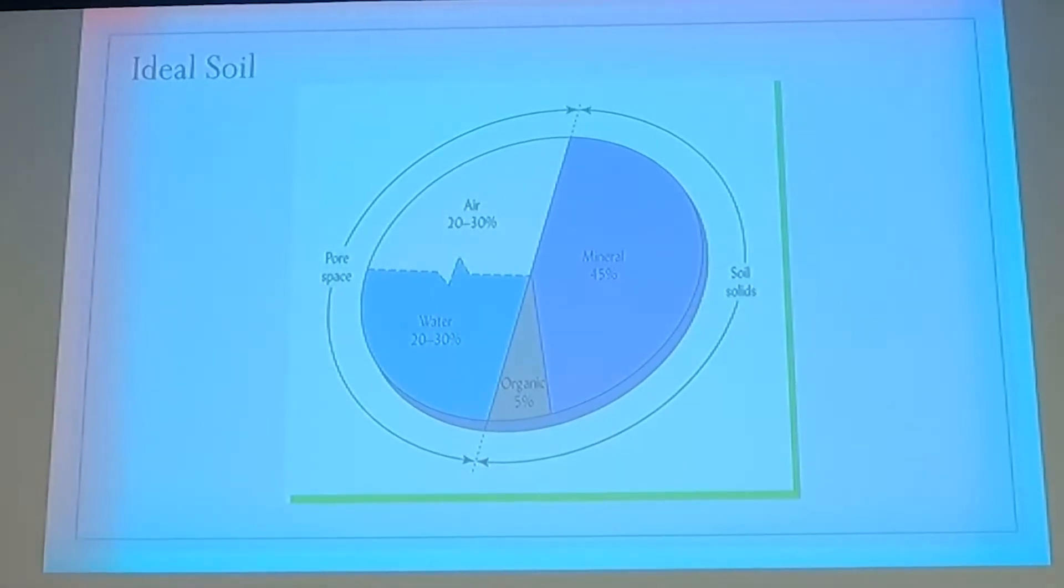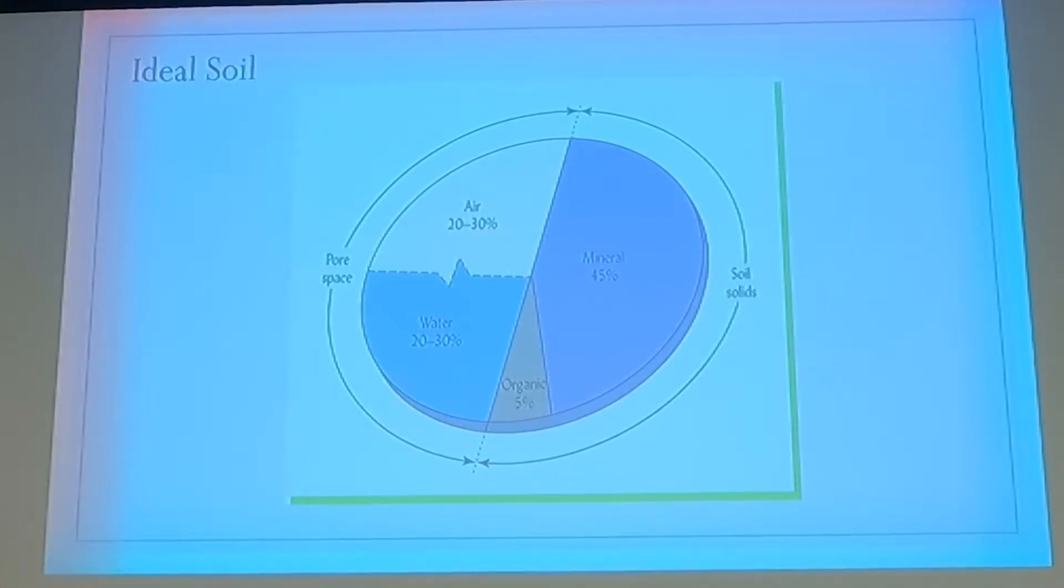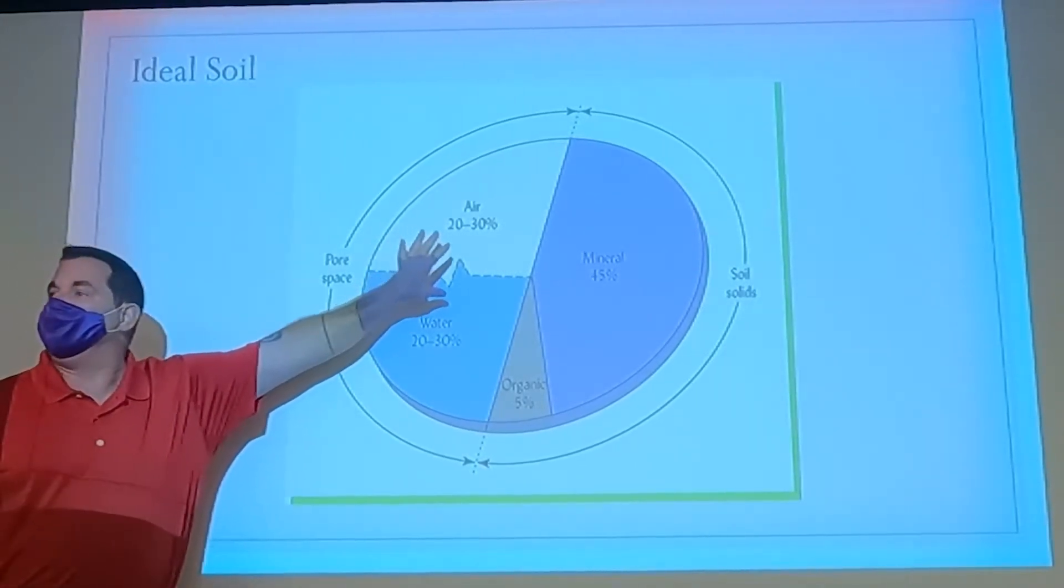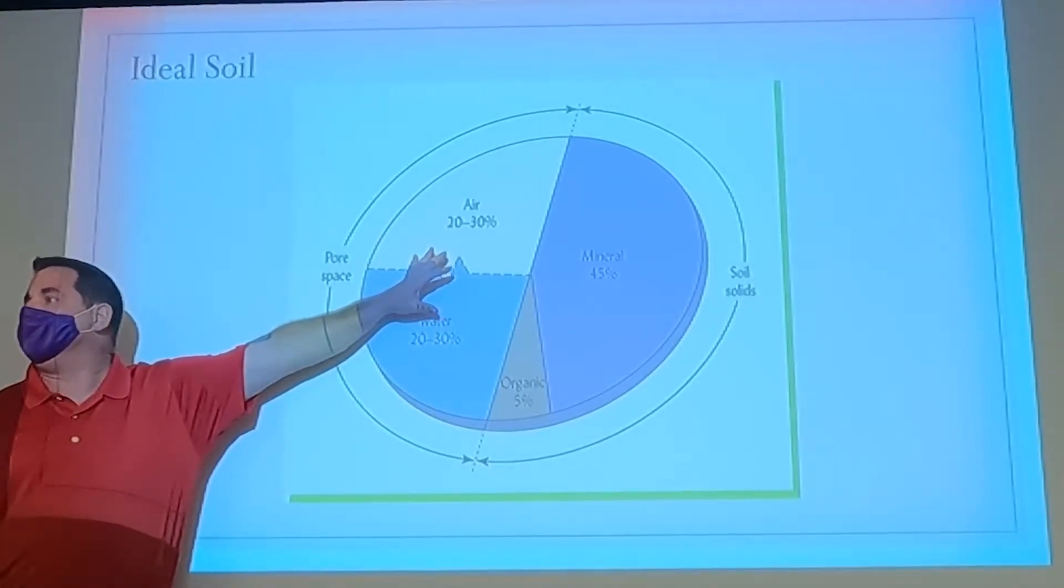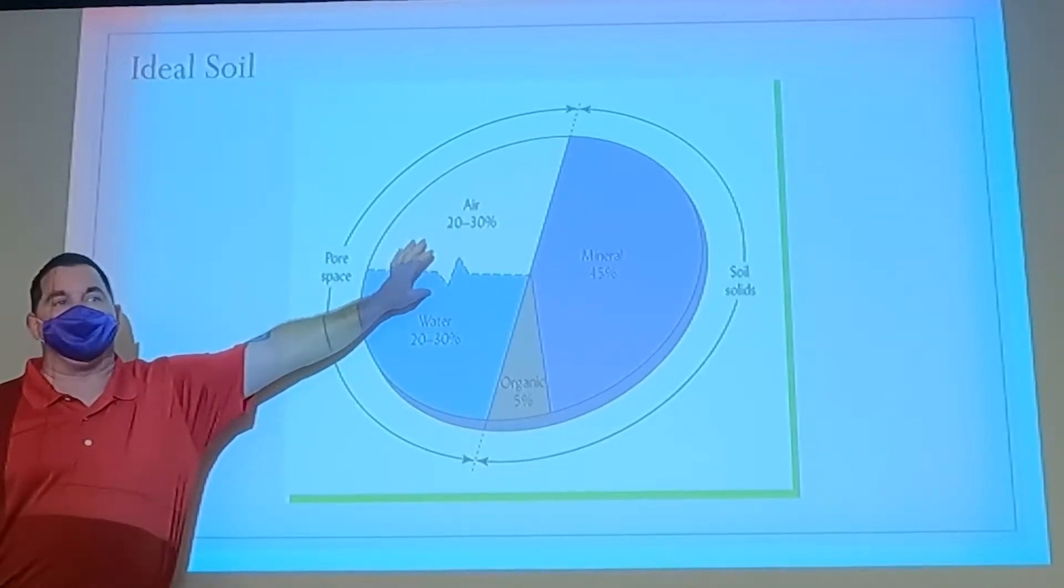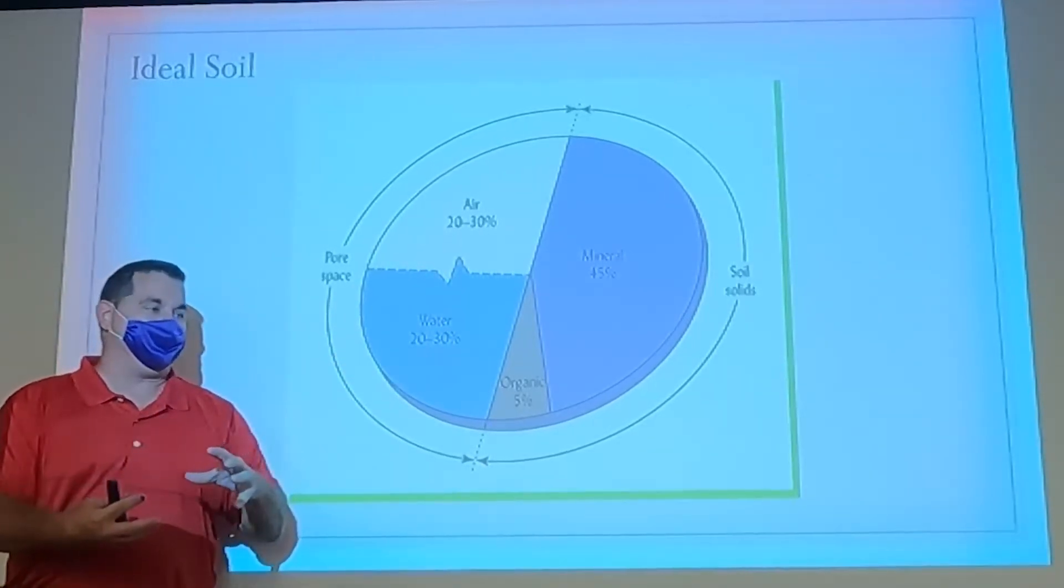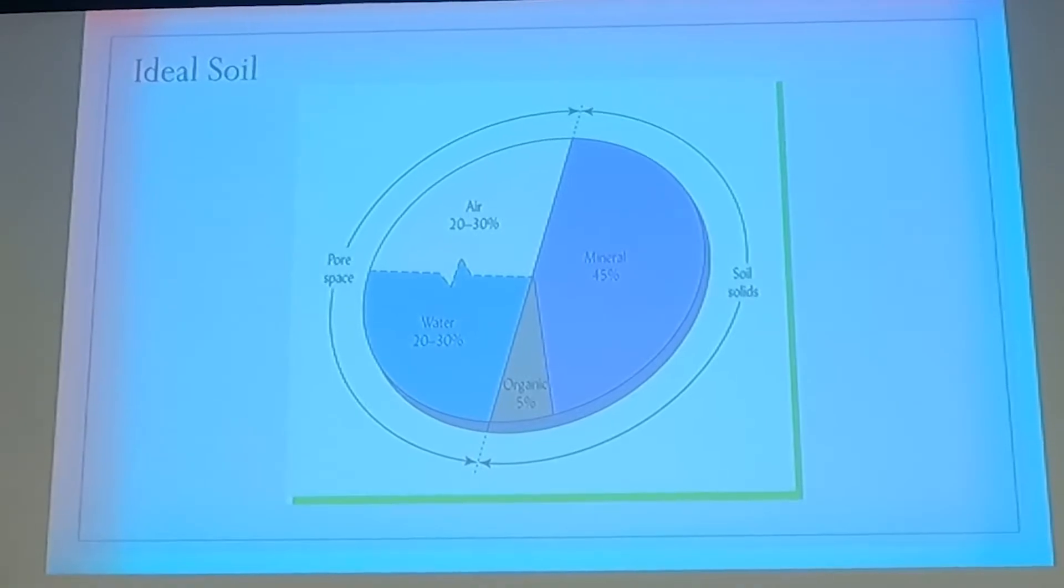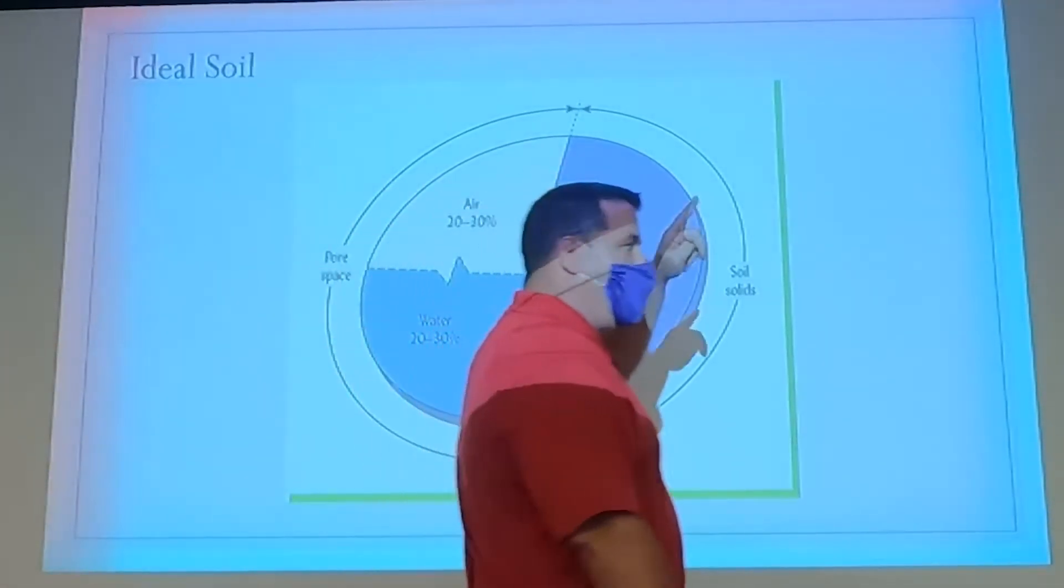Has anybody ever dug a hole and then went to go put the soil back in the hole, didn't quite fill it up? The reason why it doesn't fill it back up is because we've messed with this structure and we've adjusted the pore space a little bit. Same amount of material came out of it, but when it went back in, the structure is different. And so now it doesn't quite fill the whole hole back.